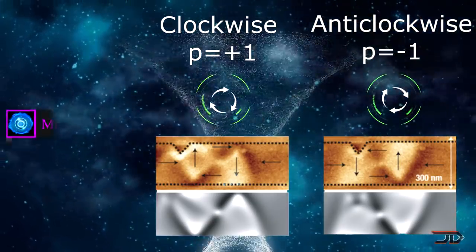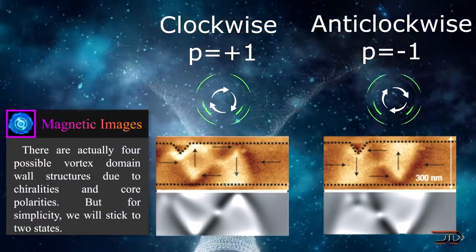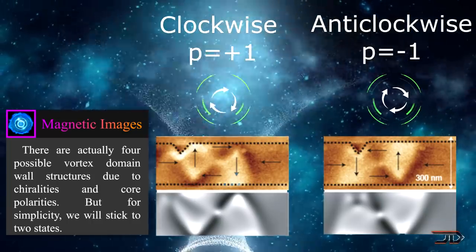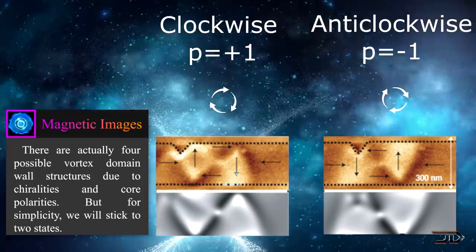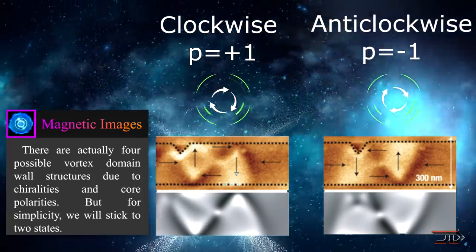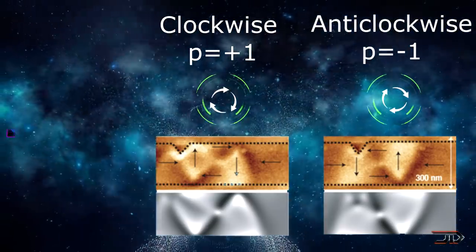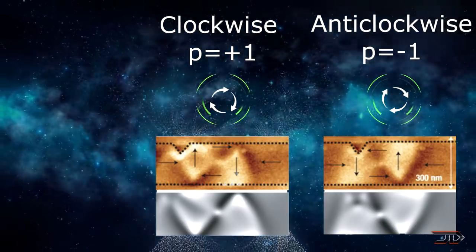But more importantly, the vortices are non-volatile, and they retain their winding without any power. This type of nanomagnetic chip would use very little energy, and it does give it a possibility that this technology makes it a strong candidate for replacing silicon in the long term future.